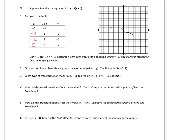Negative 5, 1 — left 5, up 1. Negative 3, negative 1 — left 3, down 1. Negative 2, negative 1 — left 2, down 1. And then 0, negative 2 — don't go left or right, go down 2. You can see it's the same exact graph but shifted to the left 4 units. X's behave opposite, so when I add 4 inside, I'm actually moving left 4 units. This type of slide — up, down, left, or right — is called a translation.